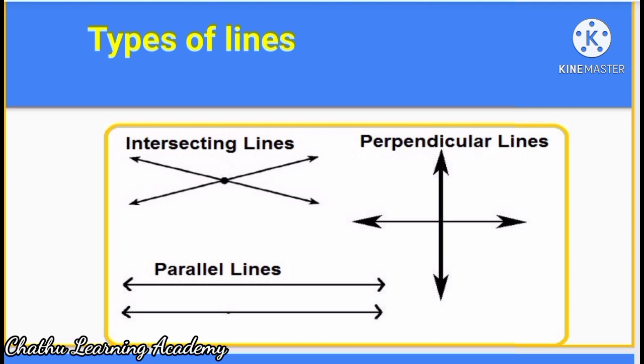Second one, perpendicular lines. These two lines also intersect at 90 degree angle. Third one, parallel lines. They do not meet at a point.